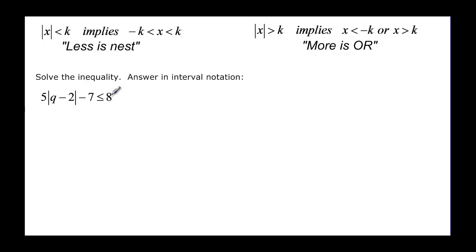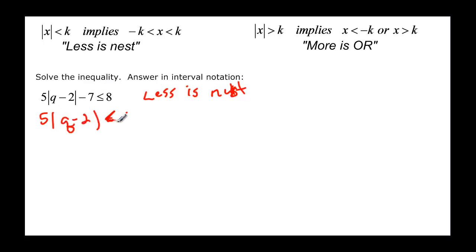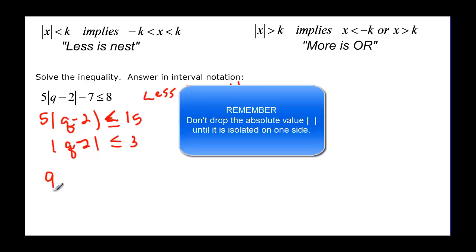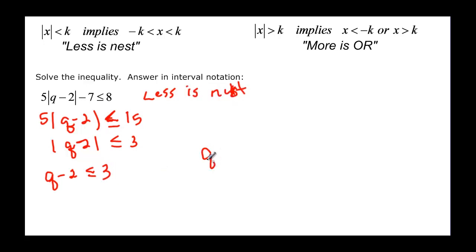Here we have an absolute value that is less than or equal to some number, so it's going to be less is nest — we should end up with a nested interval. We add 7: 5 times the absolute value of q minus 2 is less than or equal to 15. Then divide by 5: the absolute value of q minus 2 is less than or equal to 3.